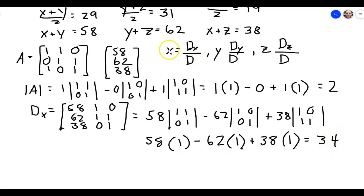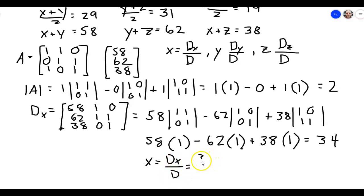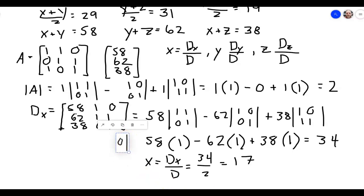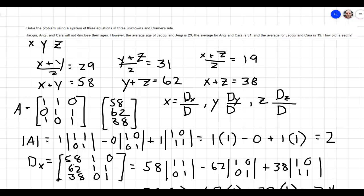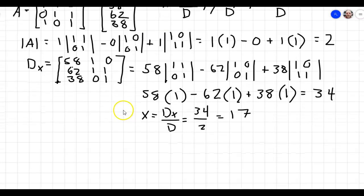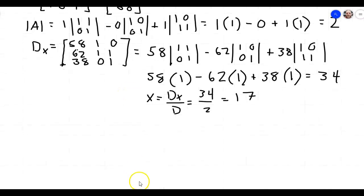Therefore, X equals D with respect to X over the determinant, which is equal to 34 over 2, which equals 17. So that means Jaquie is 17 years old.